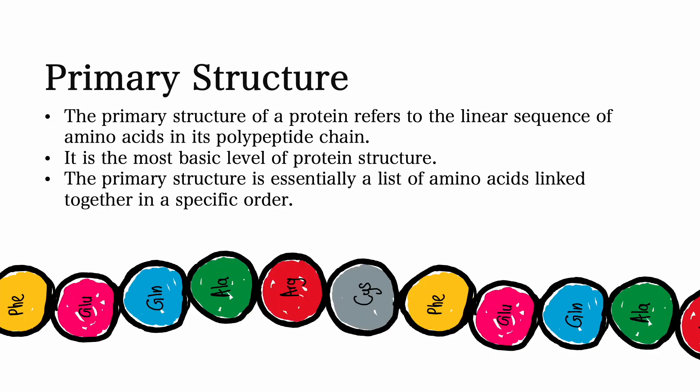Primary structure. The primary structure of proteins refers to the linear sequence of amino acids in polypeptide chains. It is the most basic level of protein structure. The primary structure is essentially a list of amino acids linked together in a specific order.